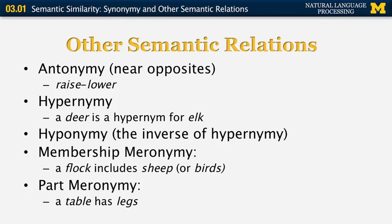Another semantic relationship is hypernymy. A hypernym is a more general concept than another — for example, 'deer' is a more general concept than 'elk.' Hyponymy is the opposite: a word that is a more specific instance of another word, so 'elk' is a hyponym of 'deer.' One more concept is meronymy, which has two kinds: membership meronymy — for example, 'flock,' which includes a bunch of sheep or birds — and part meronymy, which refers to the relationship between a table and its legs.